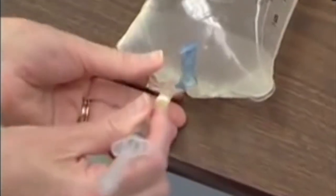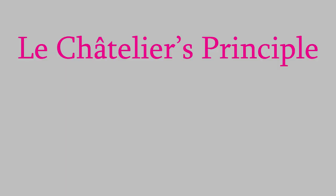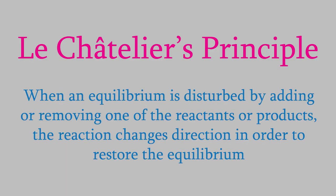To get there, we need to remember something we first talked about back in video 18: Le Chatelier's Principle. This principle states that when we disturb a reversible reaction by adding or taking away one of the reactants or products, the direction of the reaction changes in order to restore the equilibrium. If you've forgotten how it works, this would be a good time to go back and review video 18, since Le Chatelier's Principle is the most important idea we'll need to understand buffers.